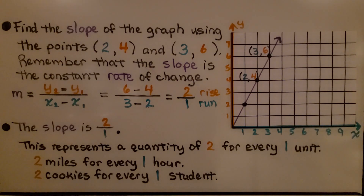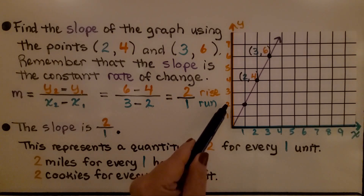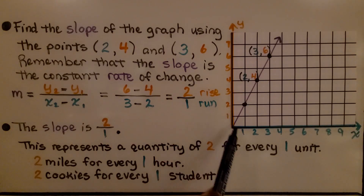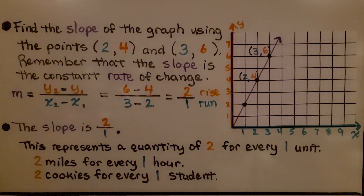This represents a quantity of 2 for every 1 unit — it could be 2 miles for every 1 hour, or 2 cookies for every 1 student.